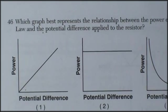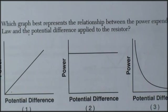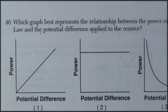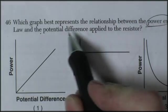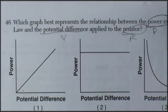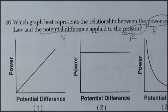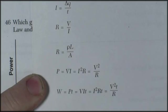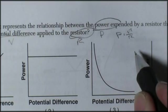Which graph best represents a relationship between the power exerted by a resistor that obeys Ohm's law and the potential difference applied to the resistance? So they want to know the power exerted and the potential difference, which is voltage, applied to a resistor. So the relationship between power, voltage, and resistance. And we can see that the relationship between power, voltage, and resistance is power equals V squared over R.